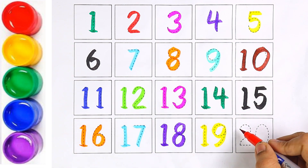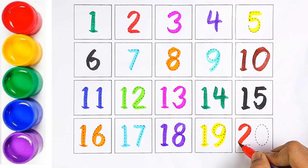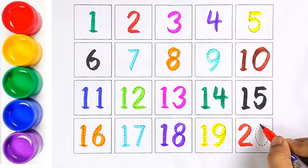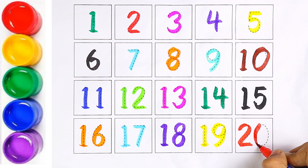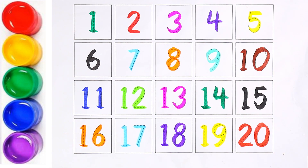Red colour. Two and zero makes the number twenty. Let's start counting from one to twenty. One.